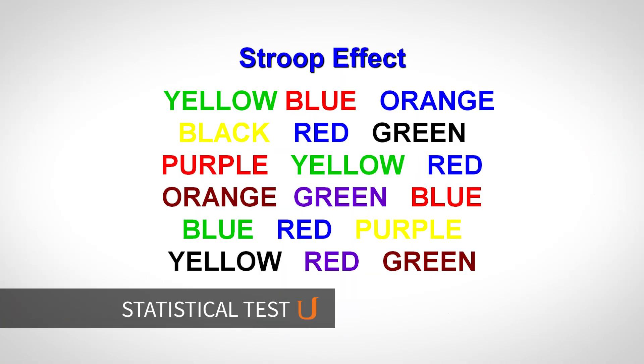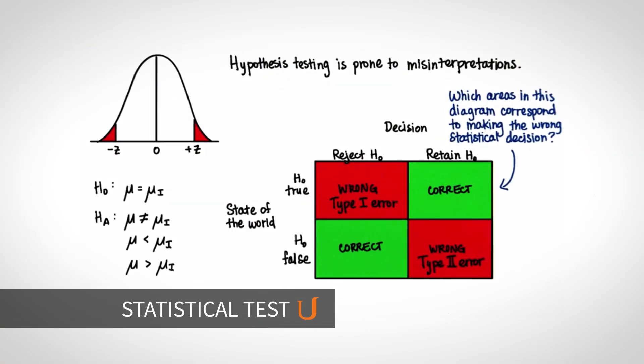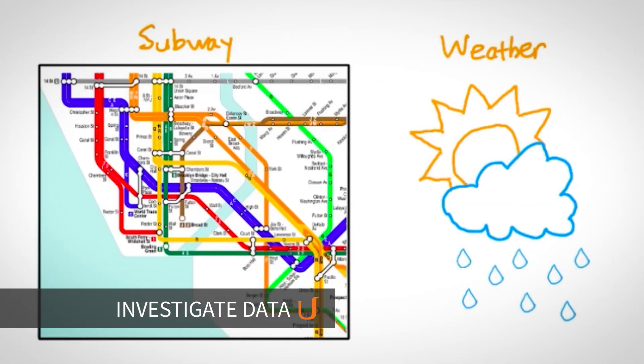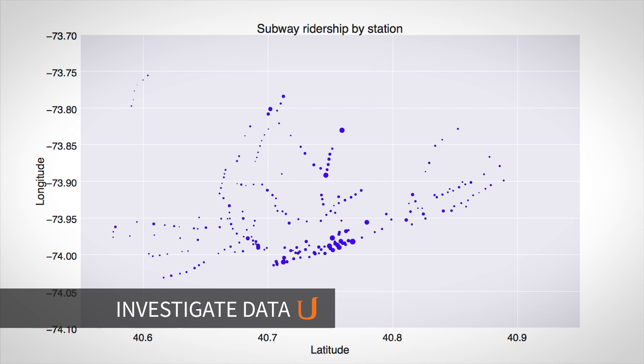To start out, you'll use statistics to analyze the Stroop effect, a classic result in experimental psychology. Then, you'll go through the entire data analysis process, starting by posing a question and finishing by sharing your findings.